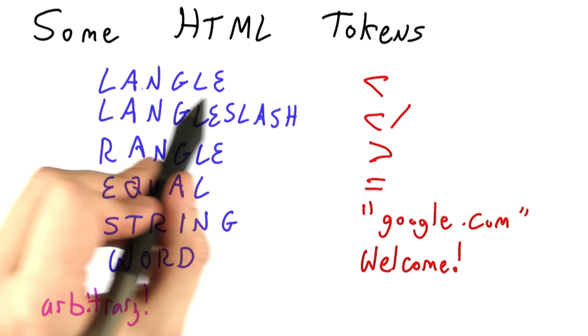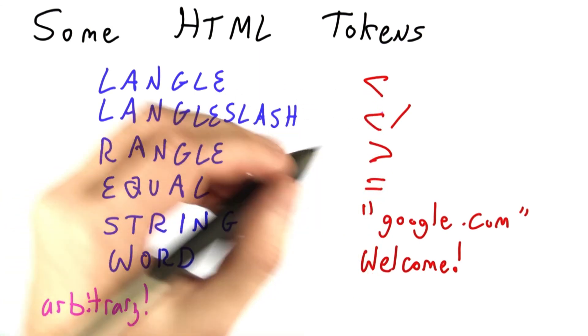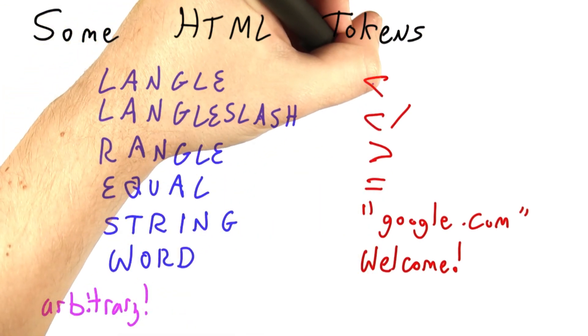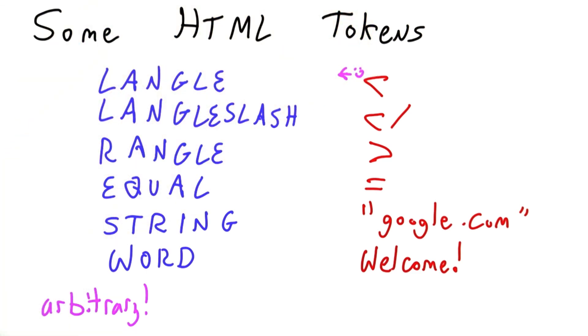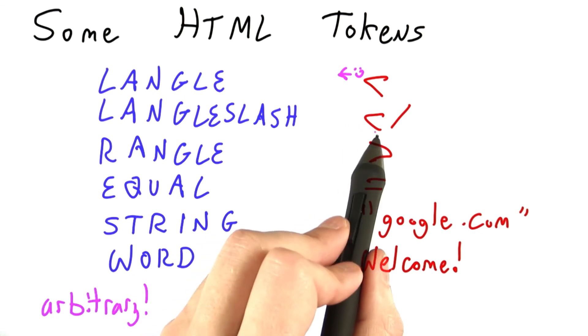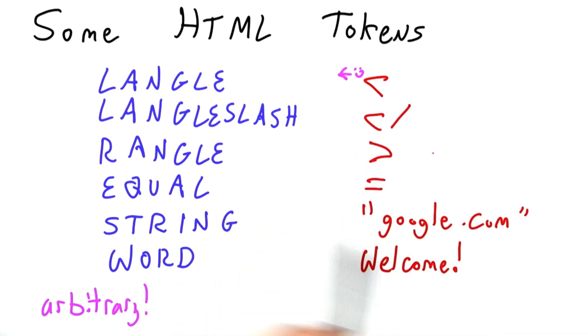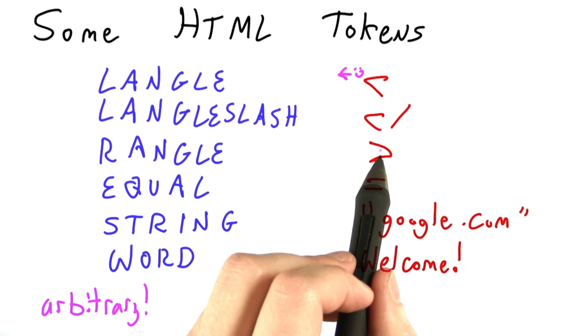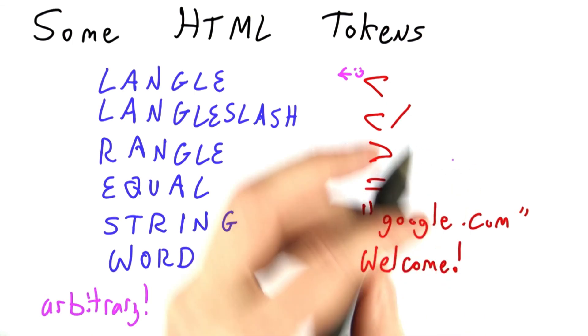So here, this left angle corresponds to an angle bracket facing left. The smaller end is the face. Left angle slash is a left angle bracket followed by a slash, division sign. The right angle bracket, an angle bracket facing to the right.